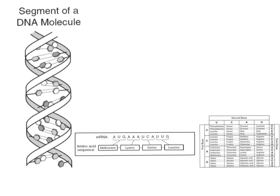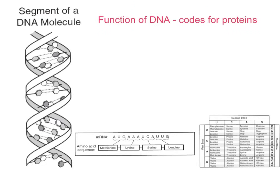DNA's function is to code for proteins — like we said with our hair color example. Maybe you're talking skin color, a particular hormone, or digestive enzymes. All of those are proteins. The job of DNA is to tell the organism which proteins it needs to make.